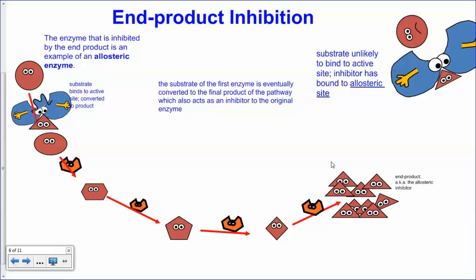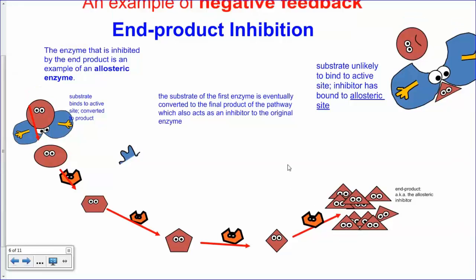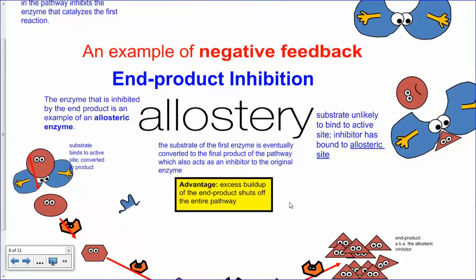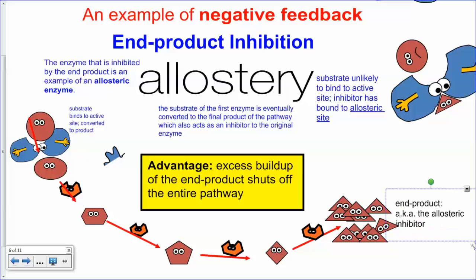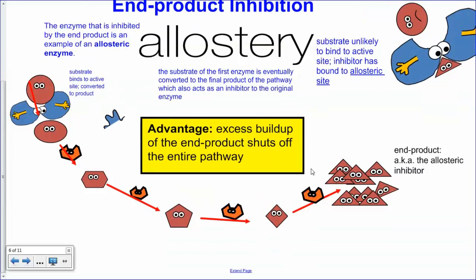This is true for a lot of pathways — you don't want to waste energy making a product unless you need it. For example, if there's too much ATP being produced, that ATP can bind to the first enzyme and halt the production of itself. If there's not enough ATP, the inhibition is relieved and the pathway continues again. Using the vocabulary correctly: excess buildup of the end product shuts off the entire pathway. The end product is the allosteric inhibitor, the controlled enzyme is the allosteric enzyme, and overall this is a specific example of non-competitive inhibition.